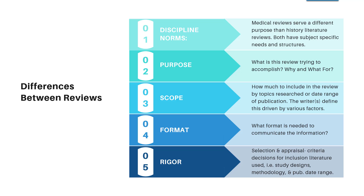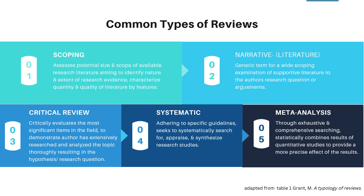The scope of the study can also determine what type of review is used — some are broader in scope than others because they have a different discipline, focus, or purpose. The format — how information is communicated to the audience — also varies by type. As we get further into these, you'll see the rigor becomes more controlled, ranging from one end of the spectrum where there's little structure beyond the authors' choosing, to systematic and meta-analysis reviews, which are very structured and meticulously documented. The five we will be discussing are the scoping, narrative, critical, systematic, and meta-analysis reviews.